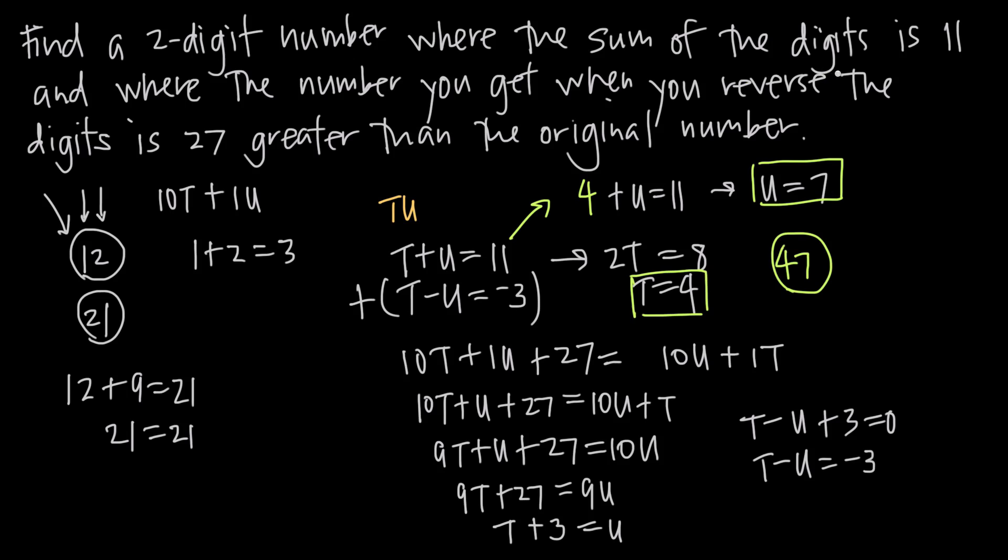And where the number you get when you reverse the digits. So when we reverse the digits, we get, instead of 47, we get 74. Where 74 is 27 greater than the original number 47. So when we take 74 minus 47, we should get 27.